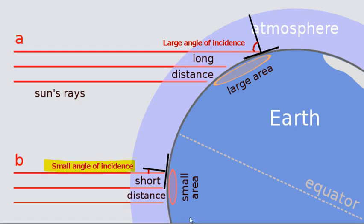In contrast, the sun is never high in the sky near the poles, so there is a large angle of incidence, meaning the sun's rays arrive at a low angle to Earth's surface and are spread over a larger area. Think of how your shadow gets longer as the sun gets lower in the sky. Consequently, the sun's energy is not as intense.